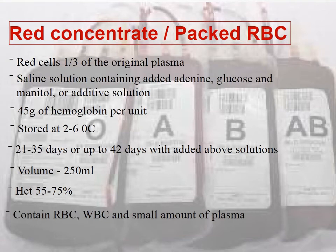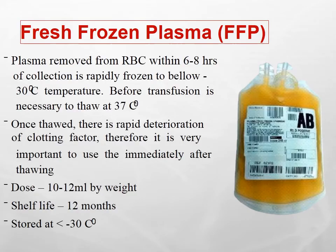Fresh Frozen Plasma (FFP) is the plasma removed from the RBCs. Within six to eight hours of collection it is frozen below minus 30 degrees centigrade. Before transfusion it must be thawed at 37 degrees centigrade, and once thawed it must be transfused immediately because of rapid deterioration of clotting factors. The dose is 10 to 12 ml per kg. The shelf life of FFP is 12 months and it is stored at minus 30 degrees centigrade.